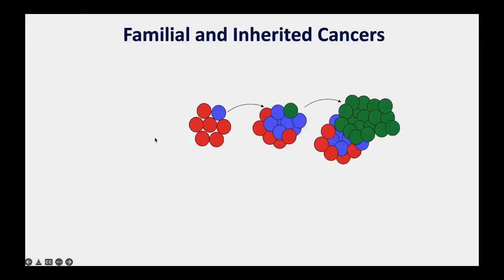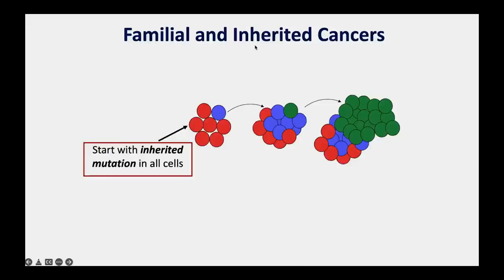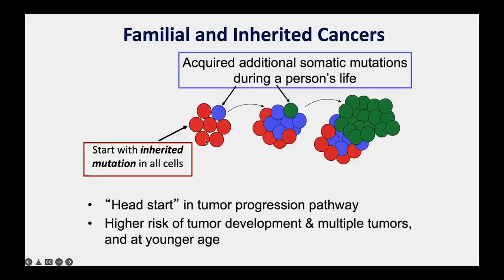Recall the diagram with cells as circles. For an inherited cancer, individuals start with one mutation already present in all the cells of their body—like starting with the first mutation already acquired. They keep acquiring additional mutations but have a headstart in that pathway. Therefore there's a higher risk of tumor development, a risk of multiple tumors, and at a younger age, because of that headstart.